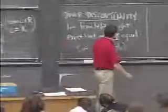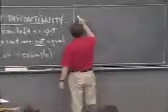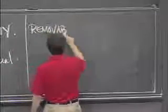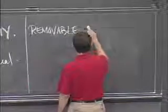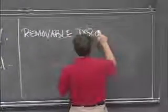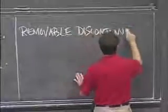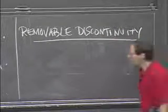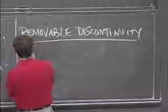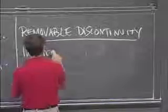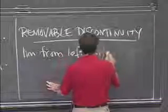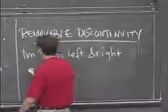So the next example that I want to give you is a little bit more subtle. It's what's known as a removable discontinuity. And so what this means is that the limit from left and right are equal.